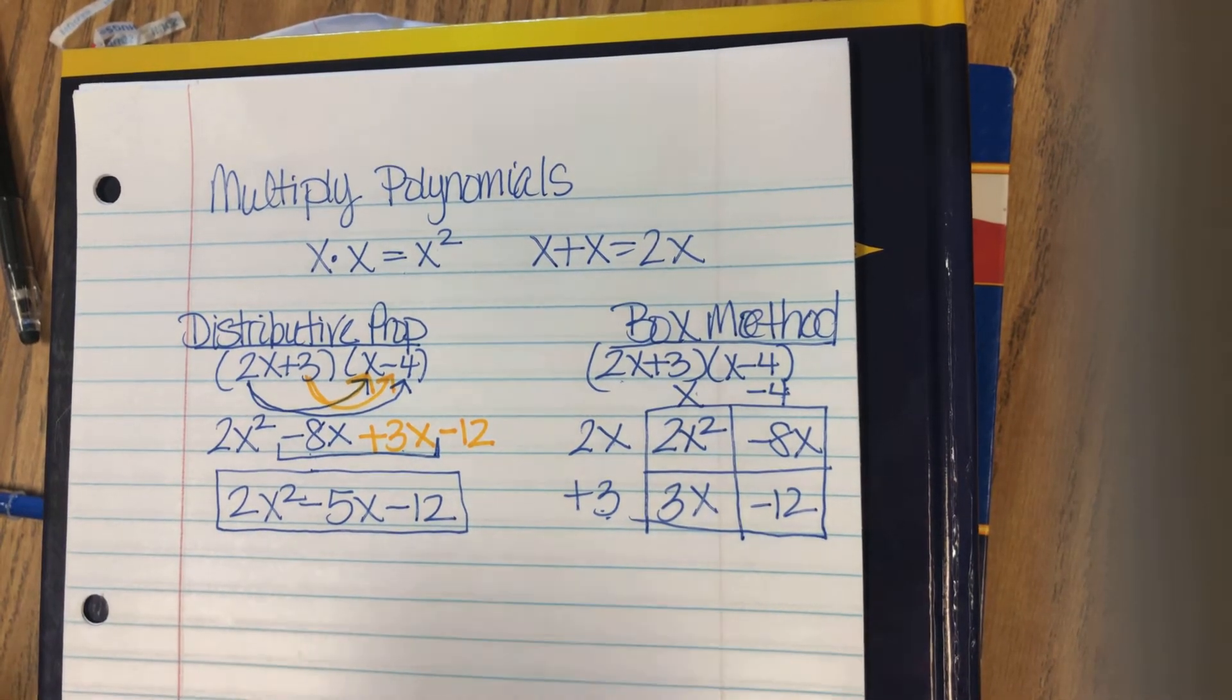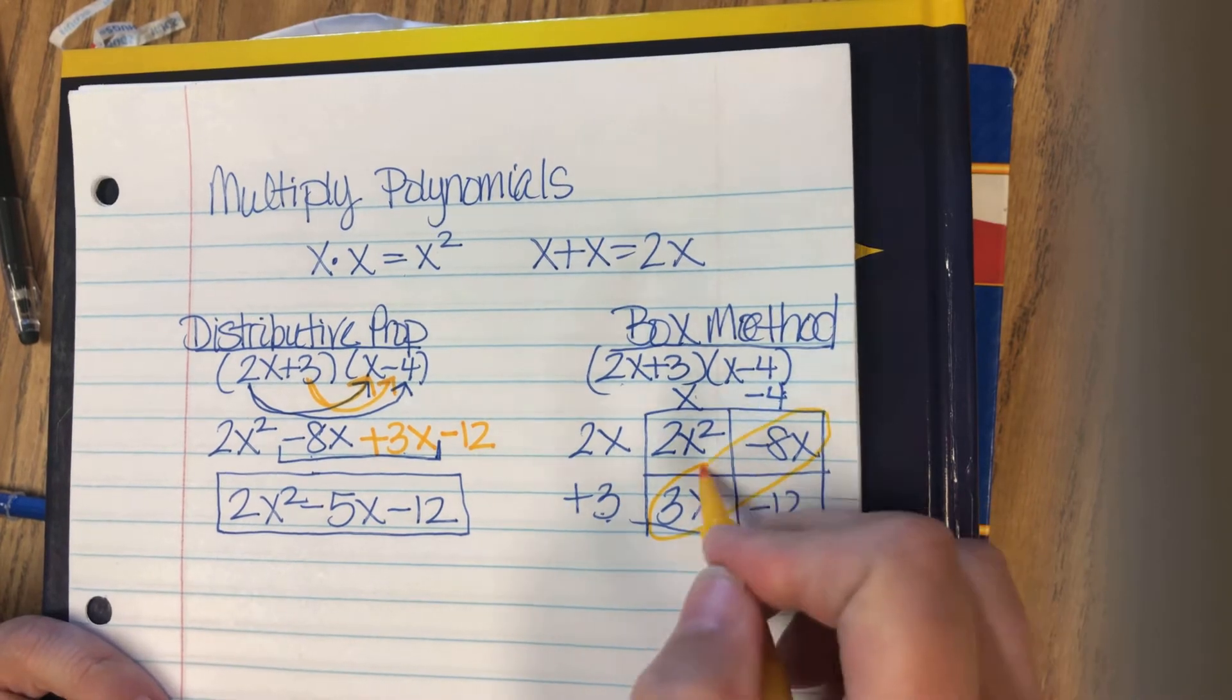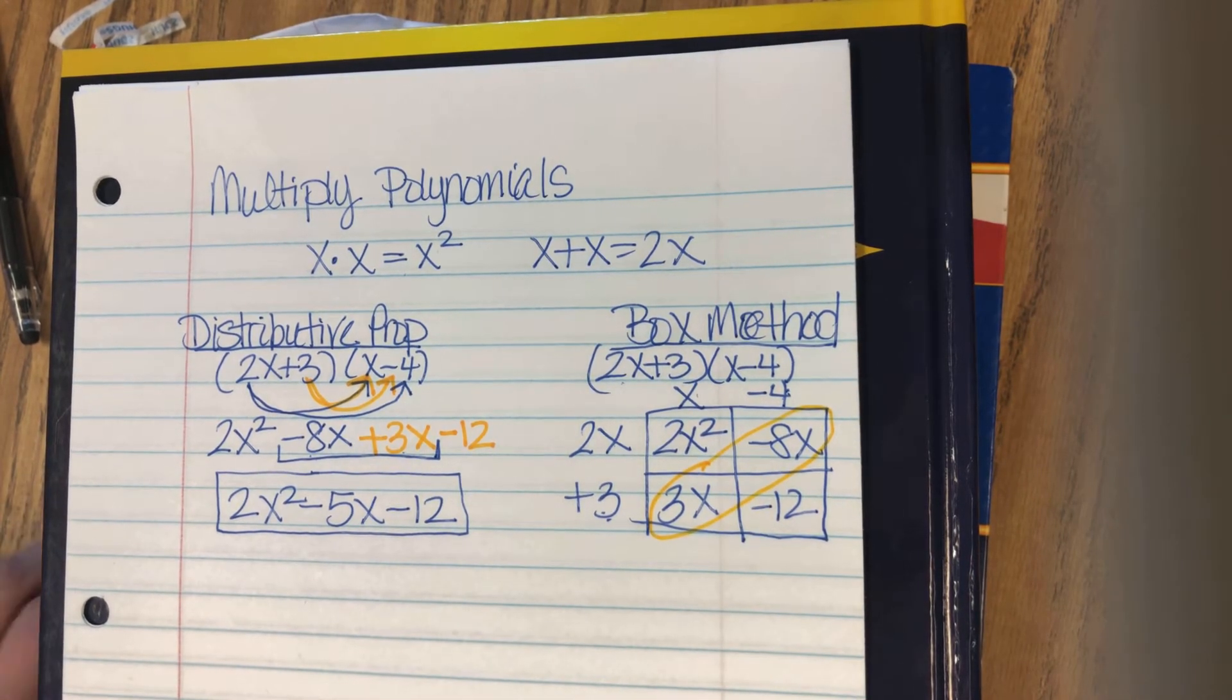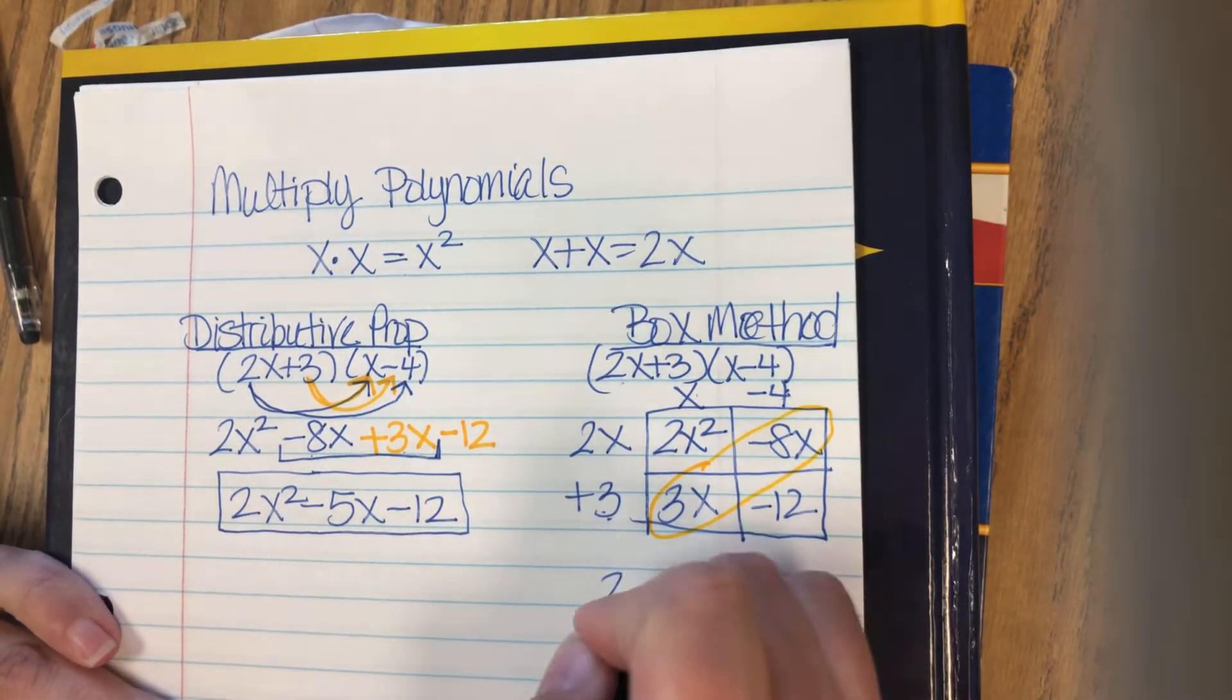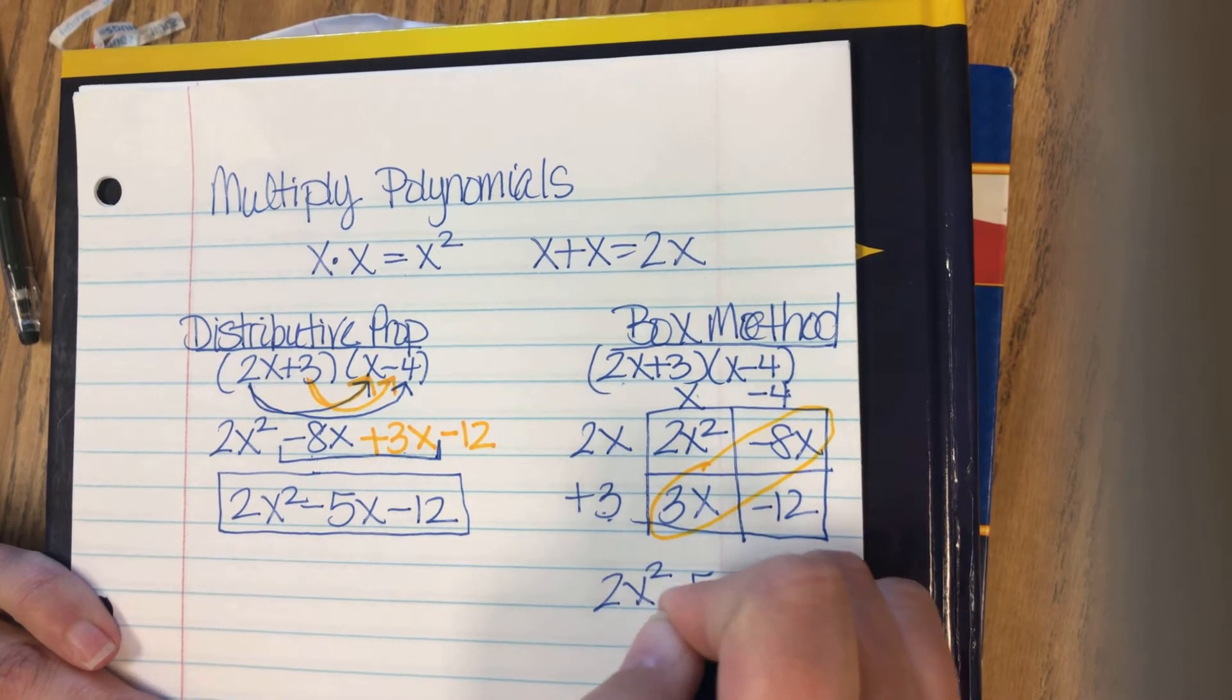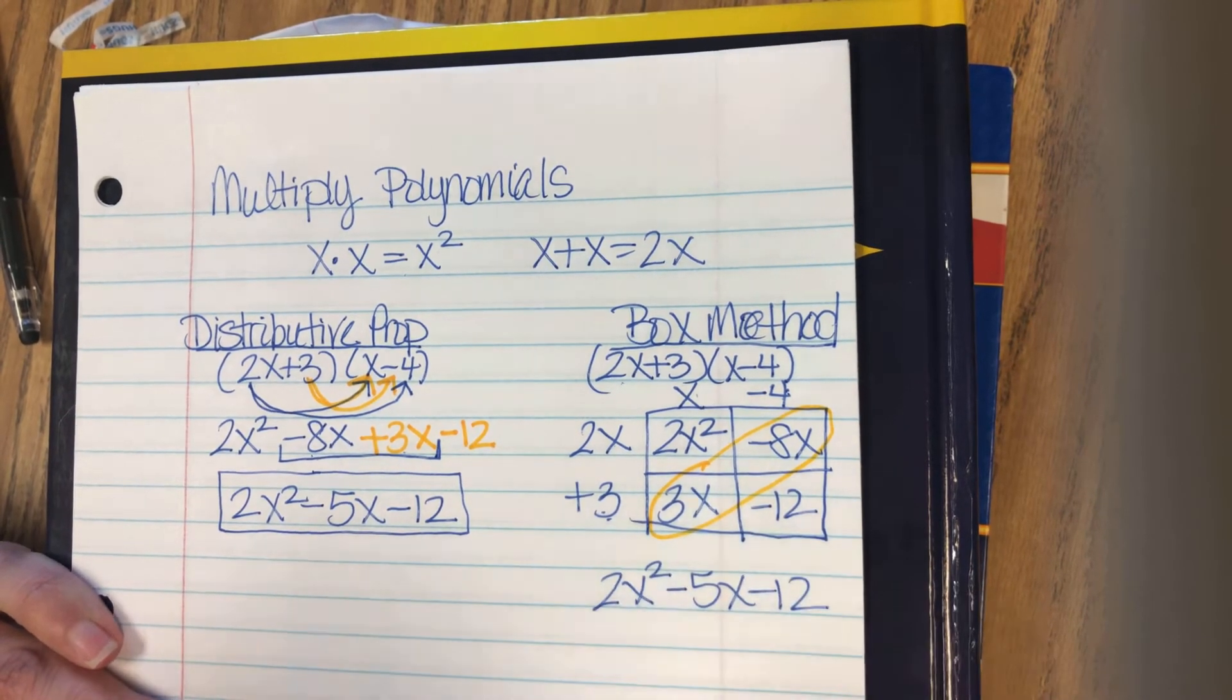And again, we look for our like terms, and they're the 3x and the negative 8x. So again, we get 2x squared minus 5x minus 12. We get the exact same answer. So let's try another problem.